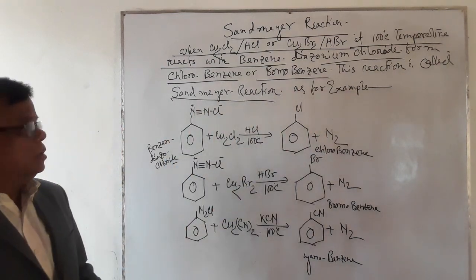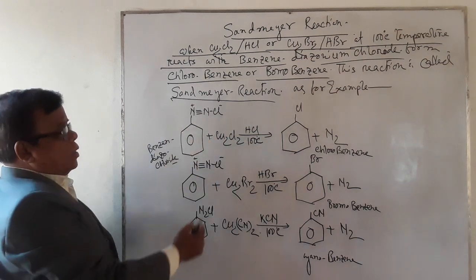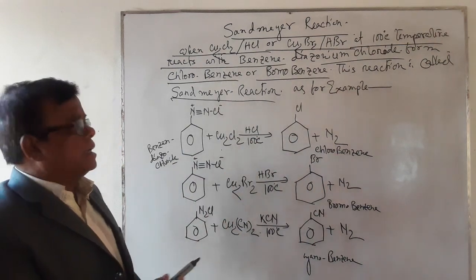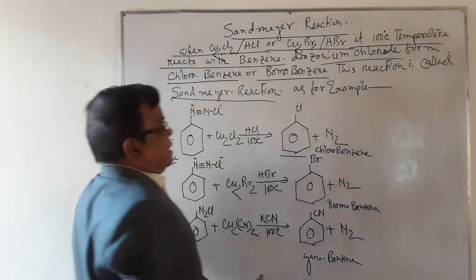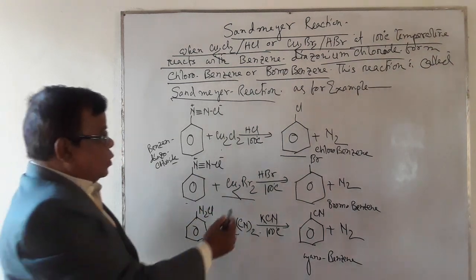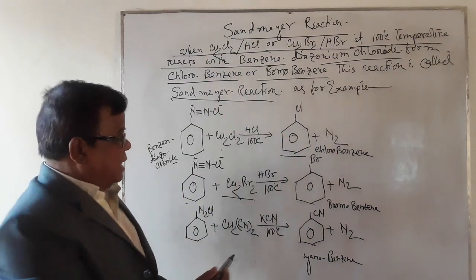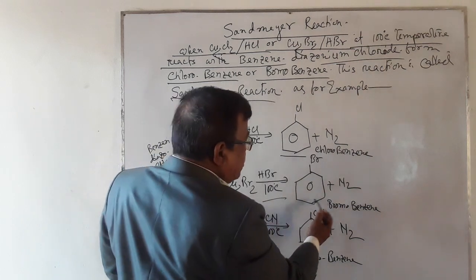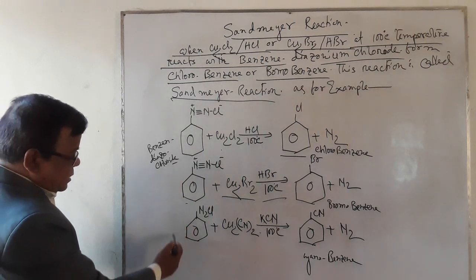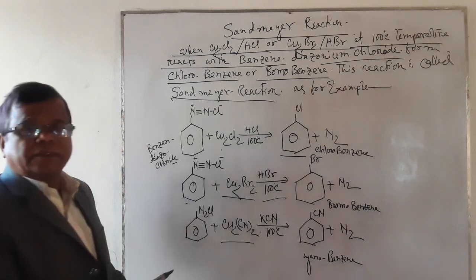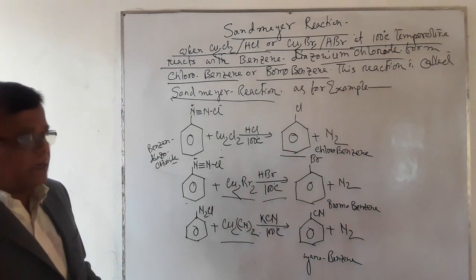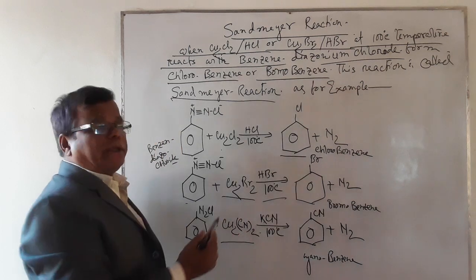For example, when benzene diazonium chloride reacts with cuprous chloride and hydrochloric acid at 100 degrees Celsius, it forms chlorobenzene. When benzene diazonium chloride reacts with cuprous bromide and hydrobromic acid at 100 degrees Celsius, it forms bromobenzene and nitrogen gas. When benzene diazonium chloride reacts with potassium cyanide at 100 degrees Celsius, it forms cyanobenzene and nitrogen gas.